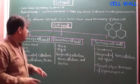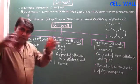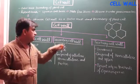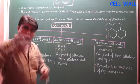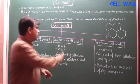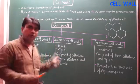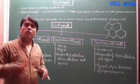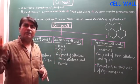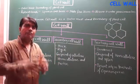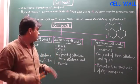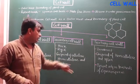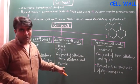Cells found in meristematic tissues have only the primary cell wall. The secondary cell wall, which is below the primary cell wall, is thick and rigid compared to the primary, because of more deposition of lignin and pectin substances, which make it tough, rigid, and thick. It is also composed of cellulose, hemicellulose, and pectin.